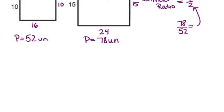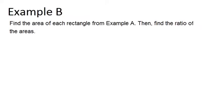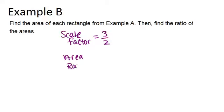Let's go to example B. Find the area of each rectangle from example A and then find the ratio of the areas. Remember in example A, our scale factor ratio was 3 over 2. That means the area ratio should be the scale factor squared, so 3 over 2 squared or 9 over 4.